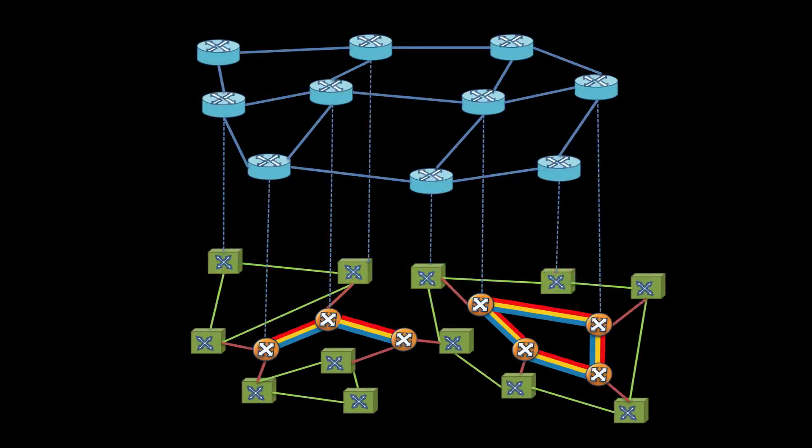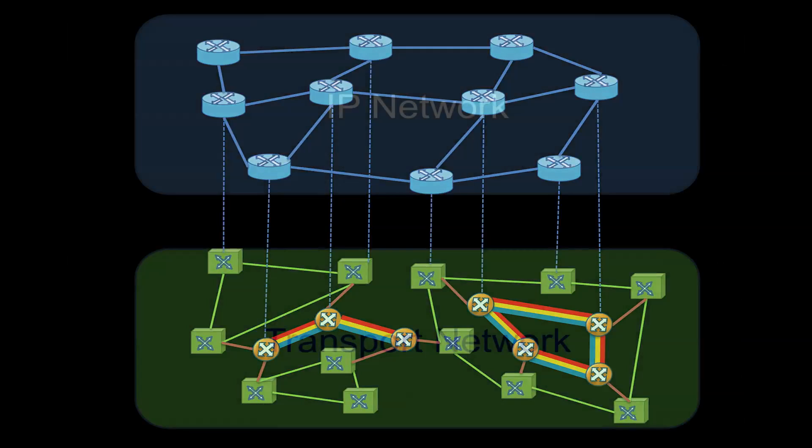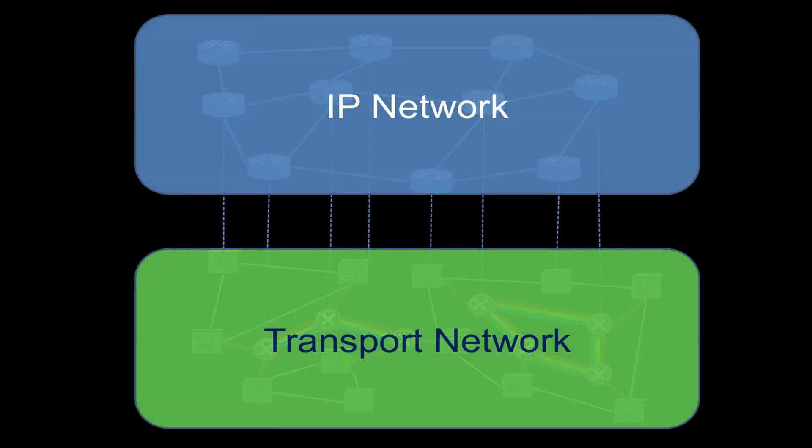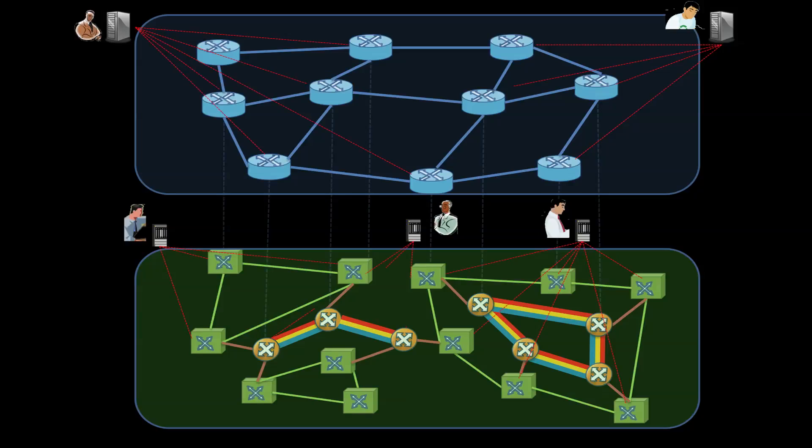And so, typically, large service providers such as AT&T and Verizon support two such infrastructures, a packet switch IP network and an underlying circuit switch transport network. Today, these networks are run separately. They are planned, designed and operated by different groups of highly skilled people using different sets of tools, even if they are in the same organization.